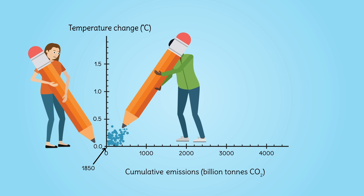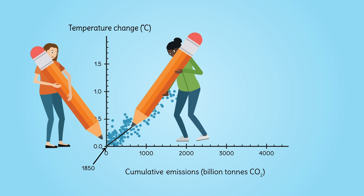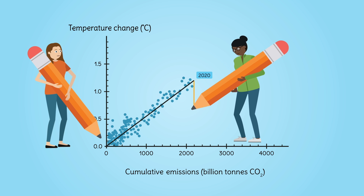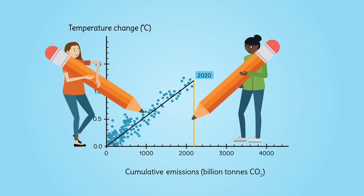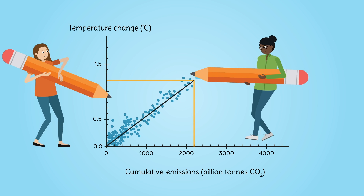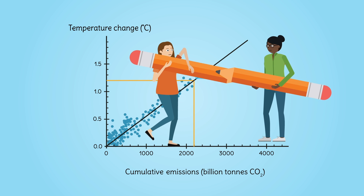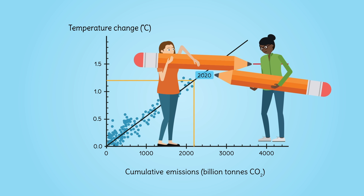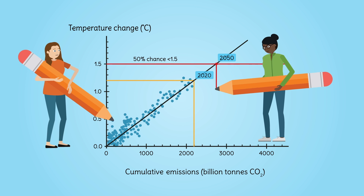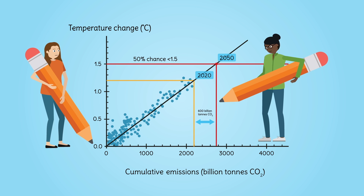Let's start in 1850, the industrial revolution — cumulative emissions are negligible, temperature change is barely detectable. Adding all data points from 1850 to 2020, humans have emitted around 2,000 billion tons of CO2, and the average temperature is about 1.2 degrees warmer.